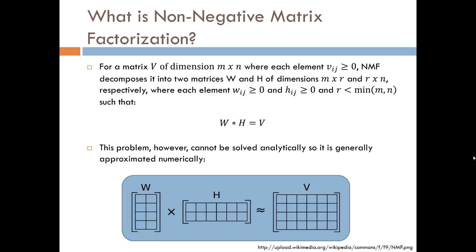Only now, instead of a lower and upper triangular matrix, we're going to decompose our matrix into lower dimensional W and H matrices. More formally, given a matrix V with M rows and N columns, where each element is non-negative, NMF will decompose it into a matrix W with M rows and R columns, and a matrix H with R rows and N columns, where each of their elements are also non-negative.